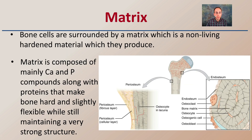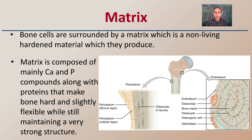First off, bone cells are surrounded by a matrix, which is a non-living hardened material which they produce. This matrix is composed mainly of calcium and phosphorus compounds, along with proteins that make bone hard and slightly flexible while still maintaining a very strong structure, because it is supporting the entire body. It needs to be hard, but it does have a slight degree of flexibility to it. We always think of it containing calcium, which it does, but it also contains high amounts of phosphorus.